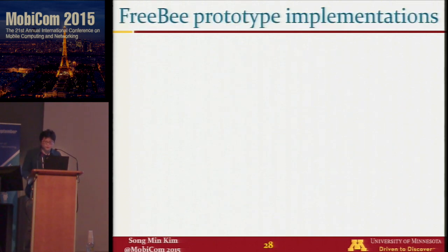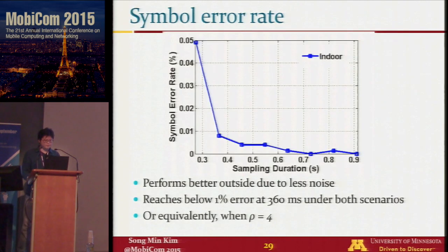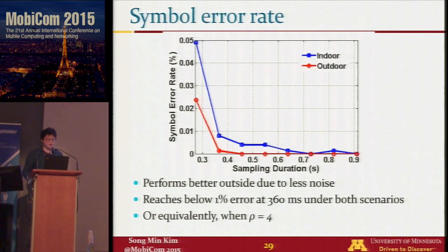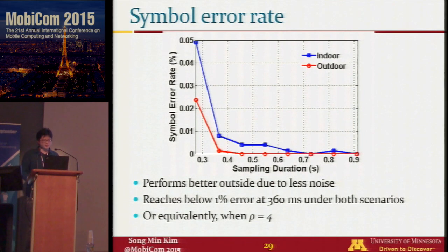Freebie is prototyped on four different platforms: WARP and a laptop for WiFi, MICA-Z for ZigBee, and a USB Bluetooth dongle. We first test the symbol error rate in both indoor and outdoor scenarios, with X-axis showing sampling duration. The longer the sampling duration, the lower the symbol error rate. Freebie performs better outdoors due to less noise, with the error rate reaching below 1% at 360 milliseconds in both scenarios.